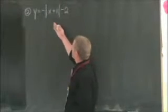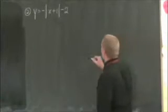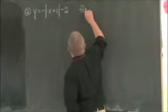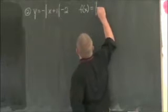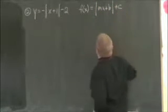OK, so y equals negative absolute value of x plus 1 minus 2. So remember, our general form: f of x equals the absolute value of mx plus b plus c.